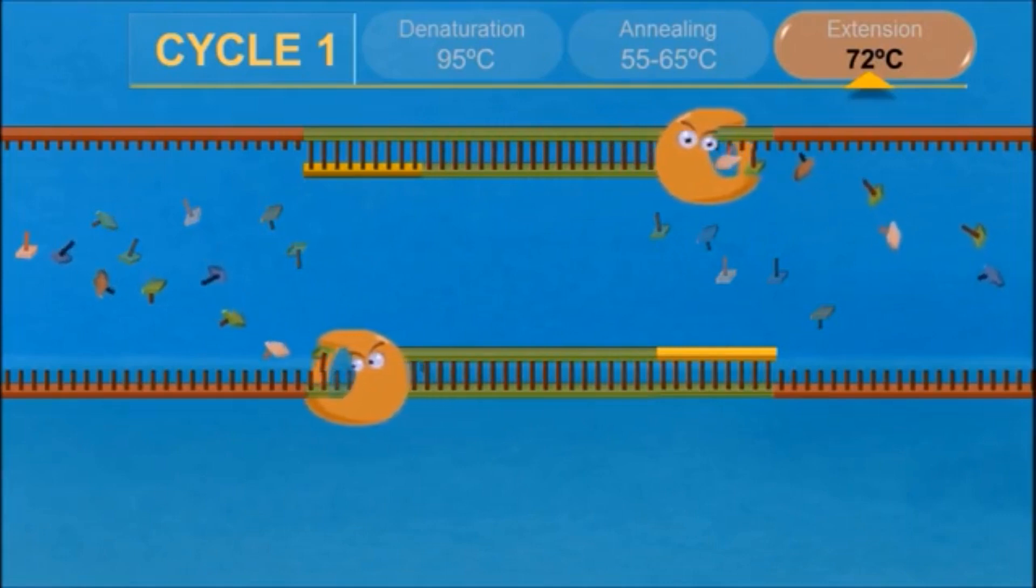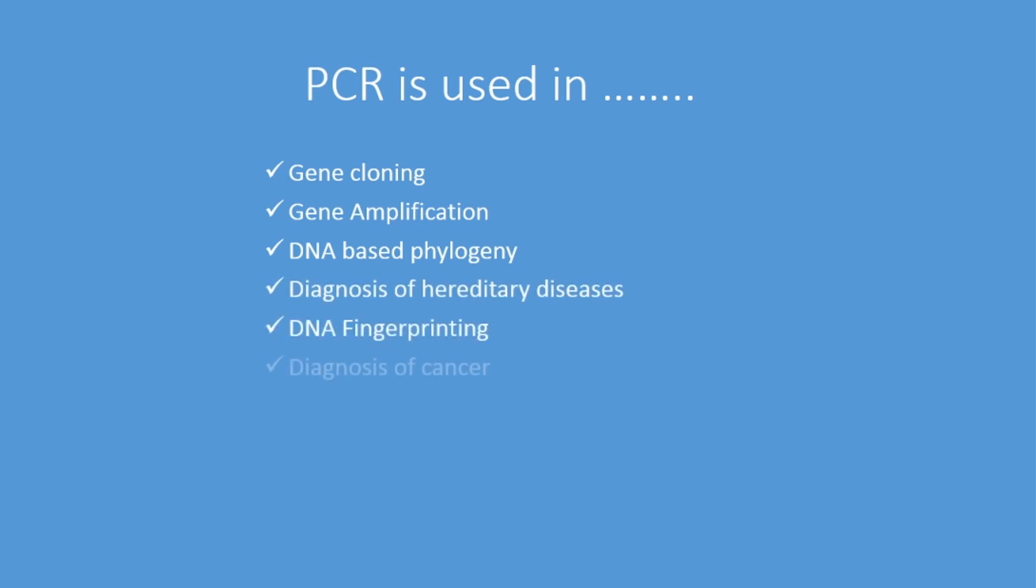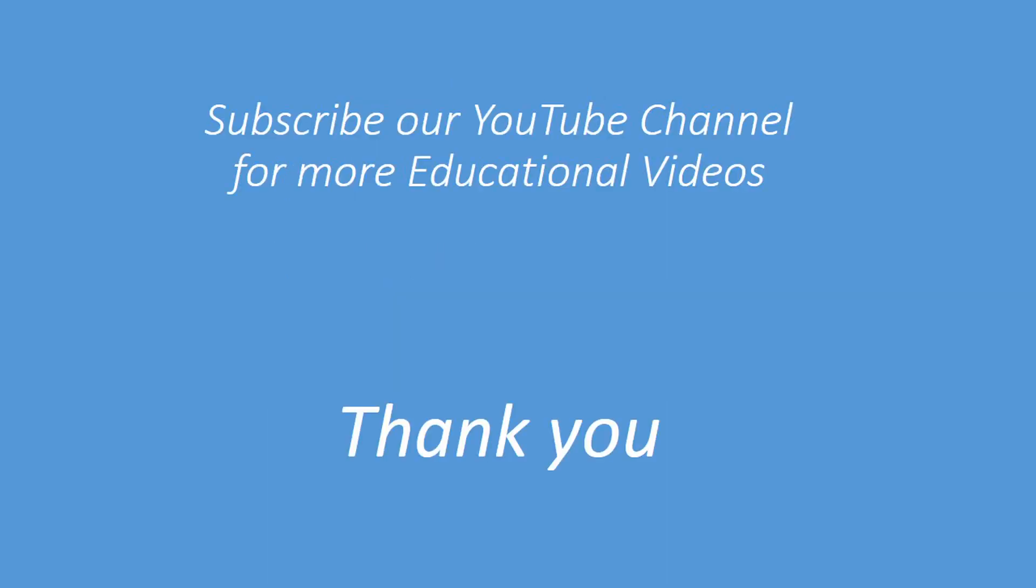Each cycle of PCR takes about three to five minutes. PCR technique is used in medical and biological research labs for a variety of applications. It is used in DNA cloning, gene amplification, DNA-based phylogeny, diagnosis of hereditary diseases, DNA fingerprinting, and diagnosis of infectious diseases and cancer.